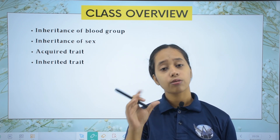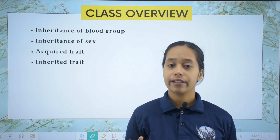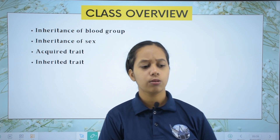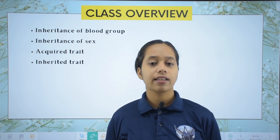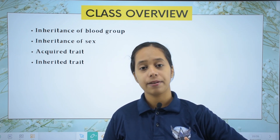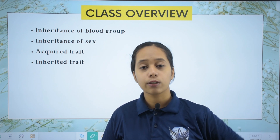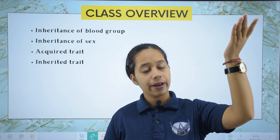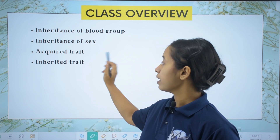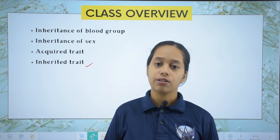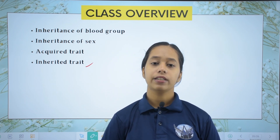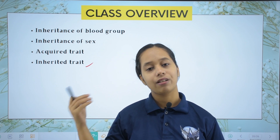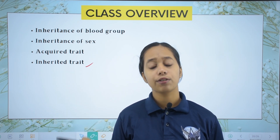For example, suppose your father is very tall and your mother is short, and you are also tall. That tall character — that height — comes from your father. You cannot decide this trait yourself; it comes genetically from your father. You are inheriting that particular trait, so this is known as an inherited trait.